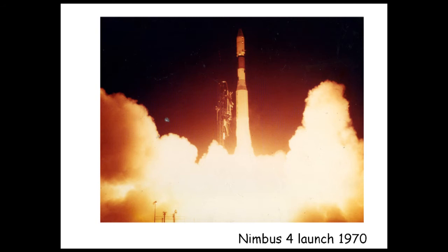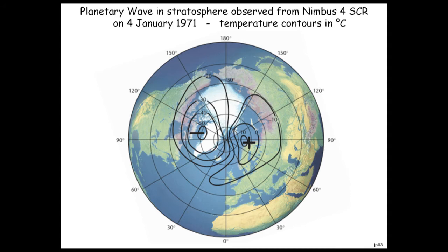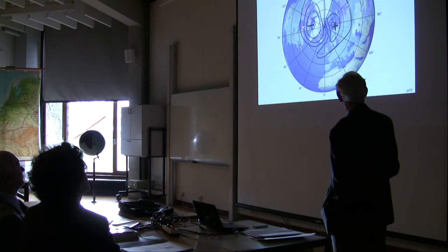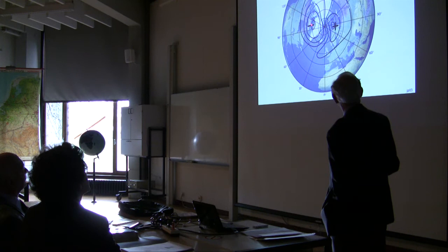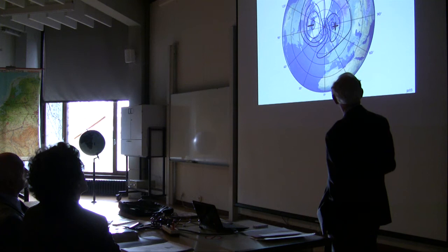There's the launch in 1970, and that's one of our first measurements — the temperature at a height of about 40 kilometres, which had never been seen before on this sort of scale. That's the stratospheric warming: a big planetary wave moving around the north polar region. The temperature there is about 10 Celsius; the temperature on the other side of the pole is minus 50 — a 60 degree Celsius temperature difference. We were able to observe things of that kind.